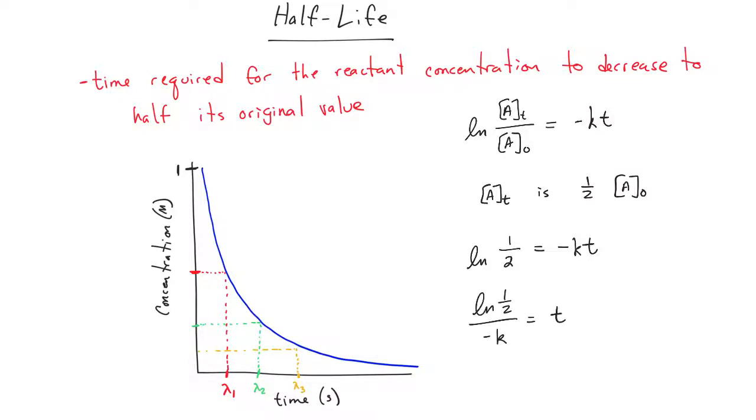Rearranging the formula, we get the natural log of one-half divided by negative K is equal to T. We're going to call this T a special name, T-half for half-life. So when we solve the equation for T one-half, we're going to get this equation right here: 0.693 divided by K is equal to T one-half.